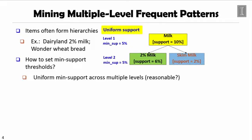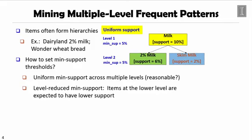One way is we set up a uniform minimum support threshold across all the levels. But there's one problem. If you set it very high, because lower-level items naturally have lower support, the low-level patterns will not show up. But if you set it very low, at the high level you get too many uninteresting patterns because everything may show up. So a reasonable way is to set level-reduced minimum support — items at a higher level use higher minimum support like 5%, and when you go down to the lower level, you may adopt lower minimum support like 1%.